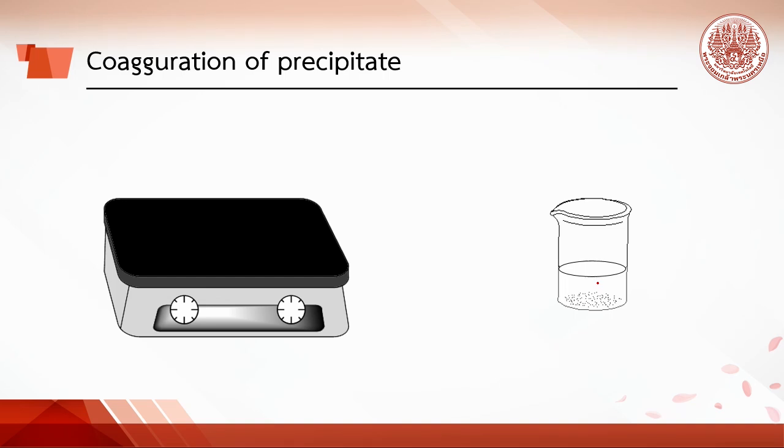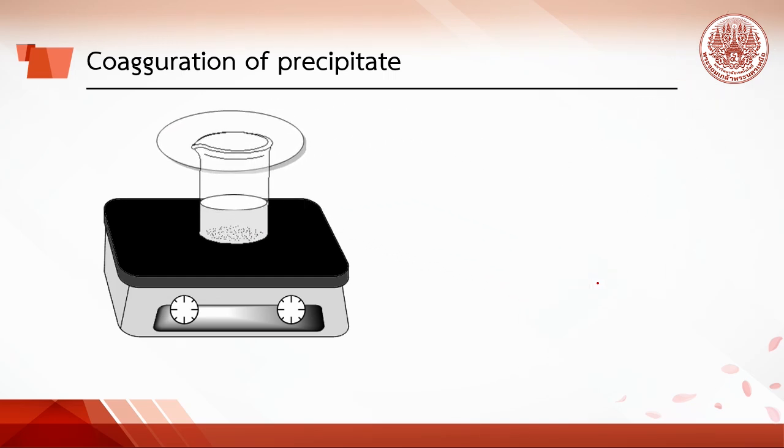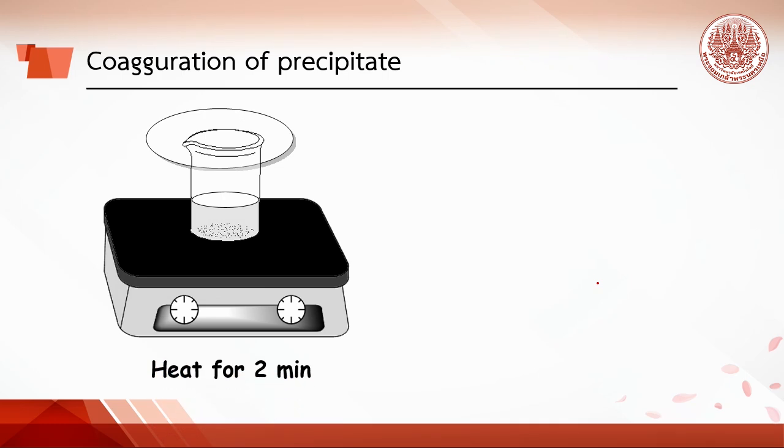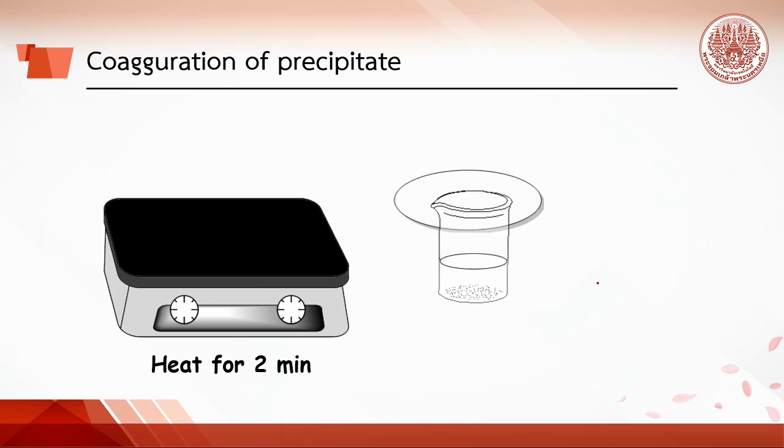To make it easier for filtration, the solution with precipitate is covered with watch glass and heated for 2 minutes. This process will help particles coagulate and become larger particles. Then, let the solution cool down.